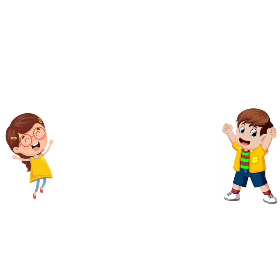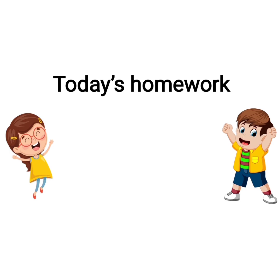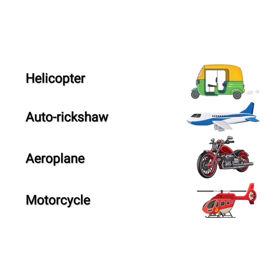Students, it's time for today's homework. Match the following. Here you can see some names of vehicles are given. You have to match them with the pictures. You also have to write all four spellings in your double line notebook two times. Students, I hope you will enjoy doing this homework. We will solve this tomorrow.